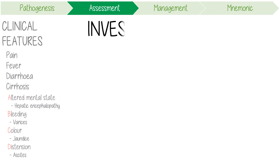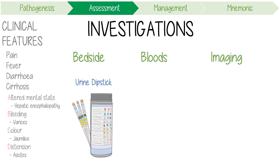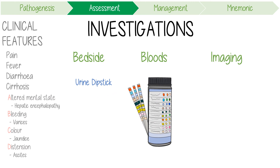For the investigation of SBP, consider a structured approach including bedside tests, bloods, and imaging. Point of care tests might help you rule out other sources of infection, like a urine dipstick, but they might also help you assess how sick the patient is. An ECG, blood glucose level, and venous blood gas are three quick point-of-care tests to immediately risk stratify the patient.